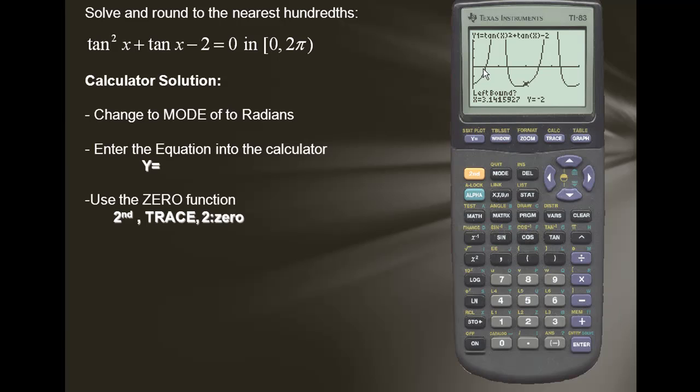Now we'll find the leftmost intercept or zero. In doing so we must set a left bound, which means that we must move our cursor to the left of our zero. So I'll simply hold down my left arrow and move the cursor to the left of the zero. I'm to the left of the zero. I'm going to press enter. Notice that a sideways triangle appears and it lies to the left of my zero.